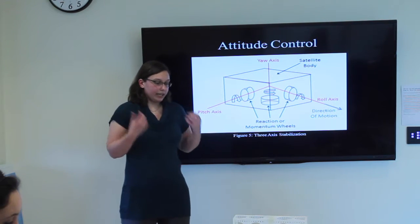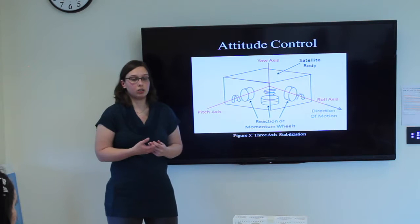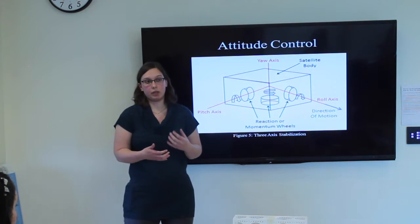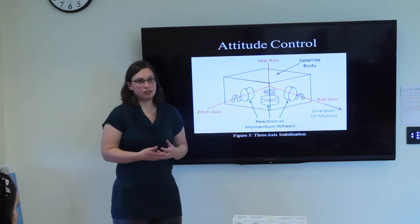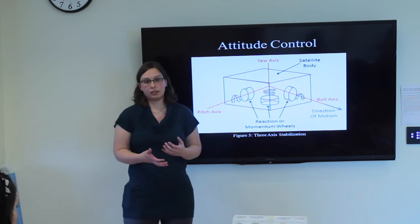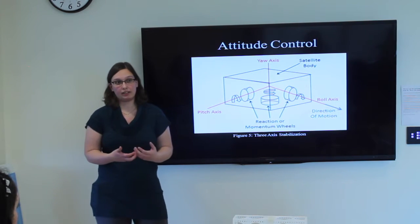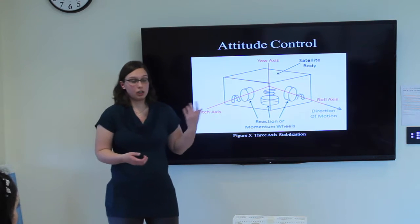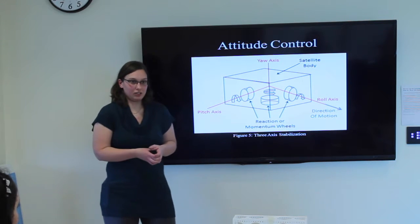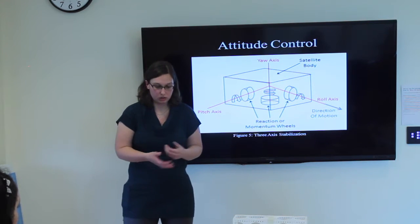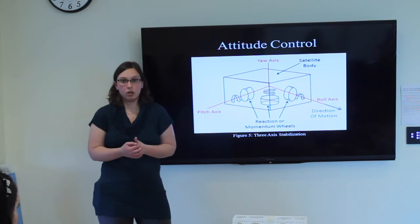So we have these two systems, Attitude Determination and Attitude Control, that work in tandem to make sure our satellite is in the right position. However, testing these situations for our satellite to make sure that they are in the right place after deployment or after a couple days in orbit is rather hard to do because of the conditions of microgravity and low Earth orbit along with other things.